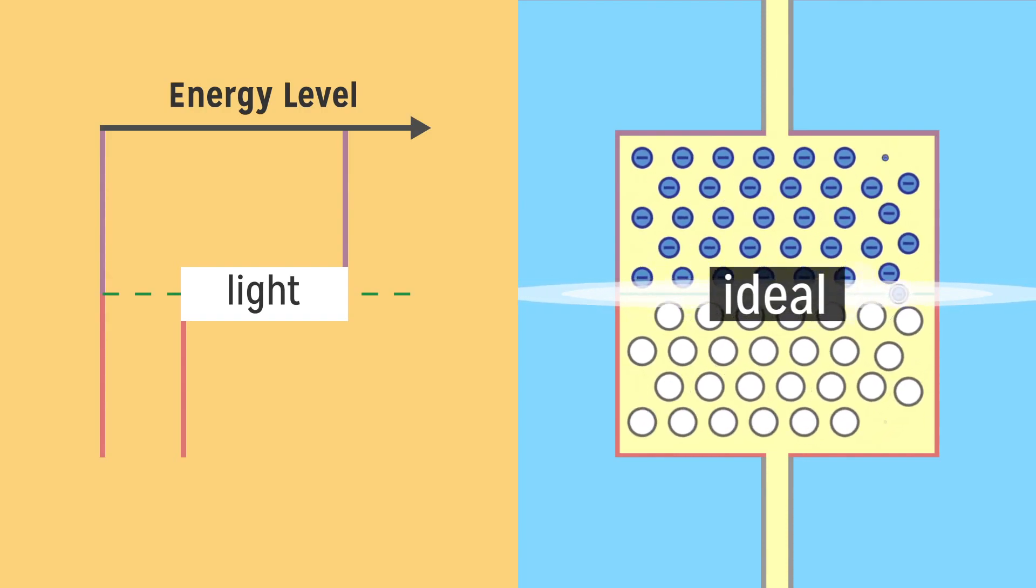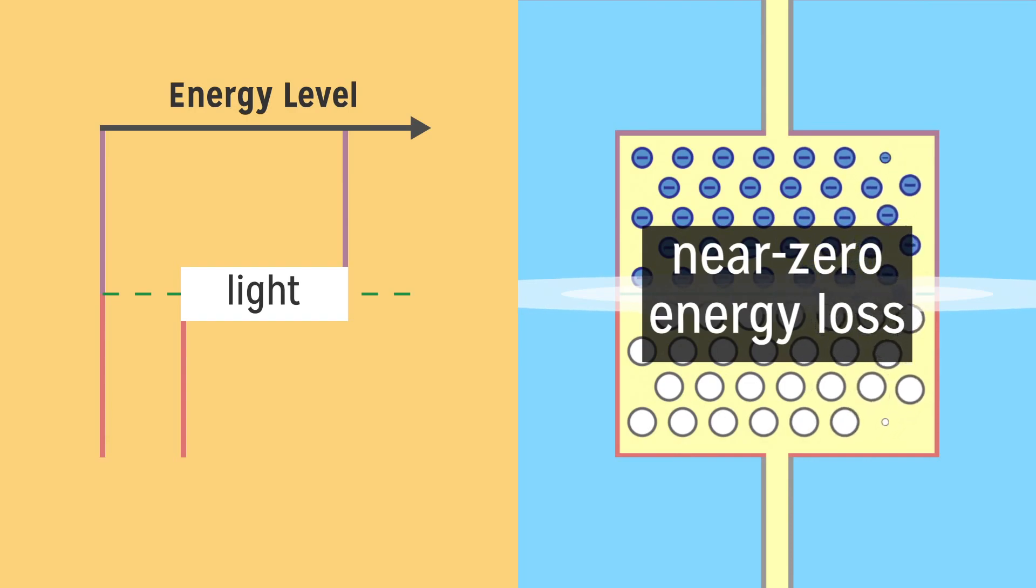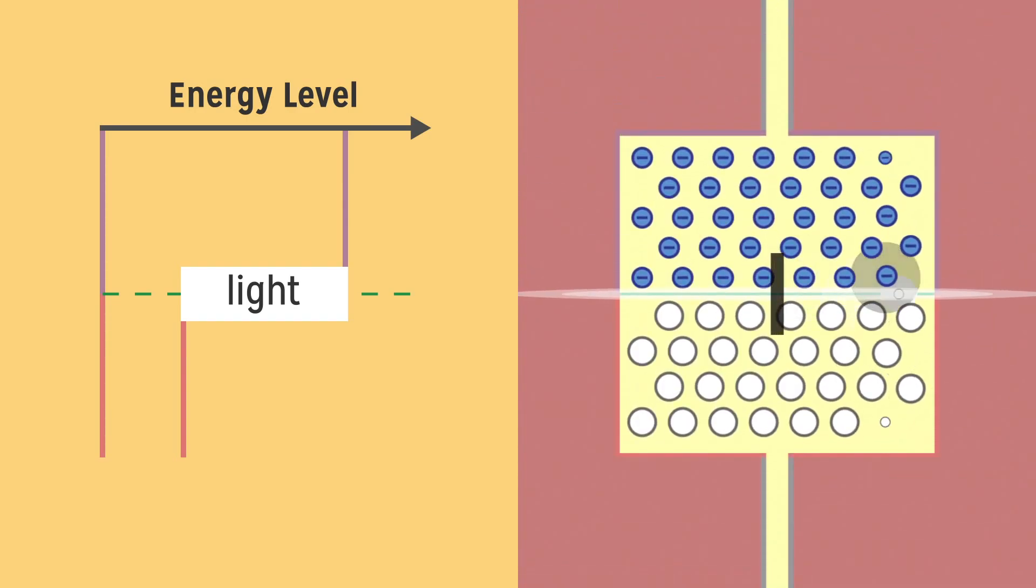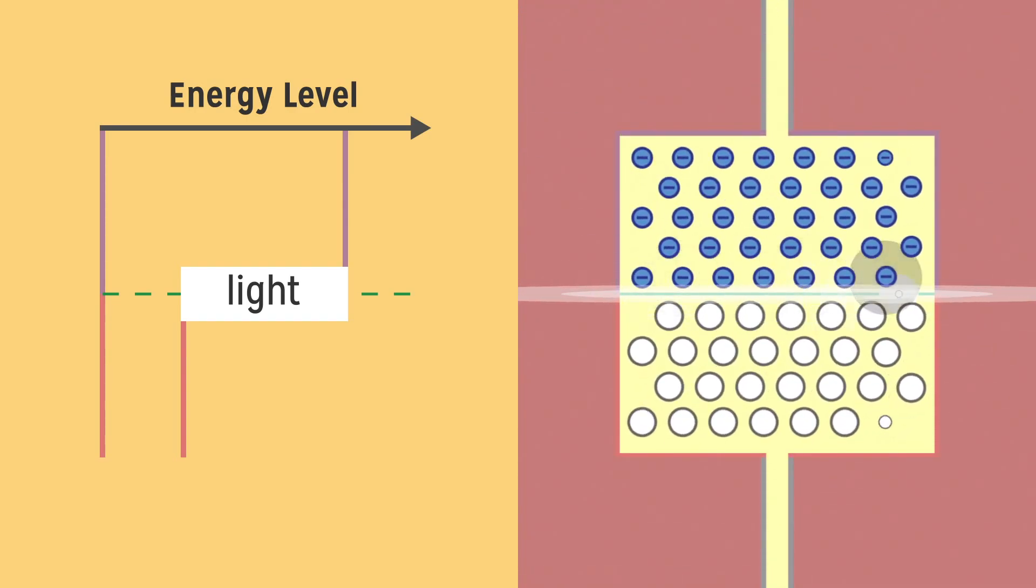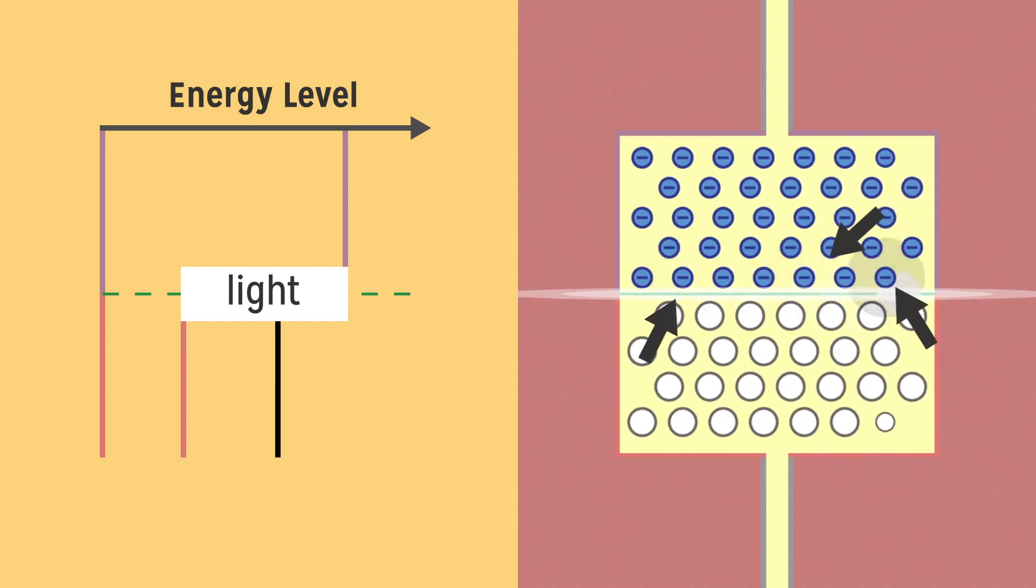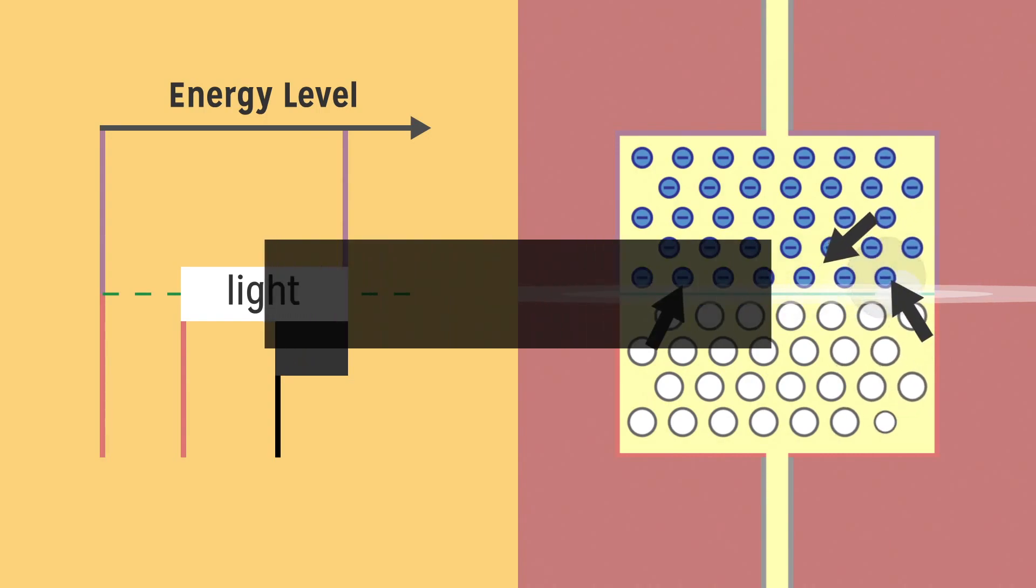So ideally, if all electrons in movement combine with holes, almost all of the electrons will convert to light. But reality isn't like that. In reality, there are some electrons that simply don't combine with holes, and their energy difference is not enough to produce visible light, which is just a waste.